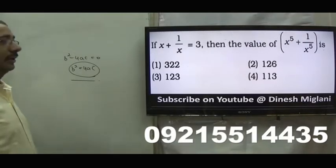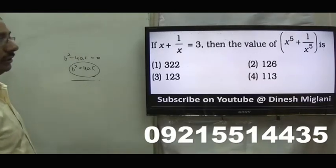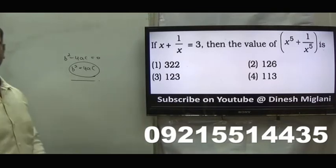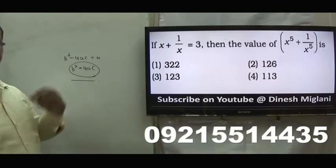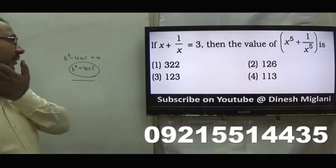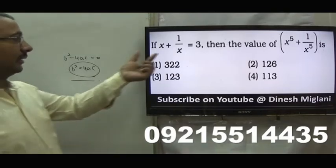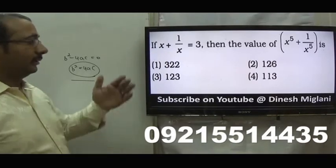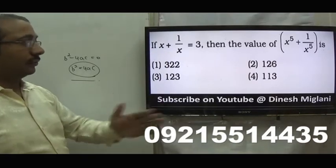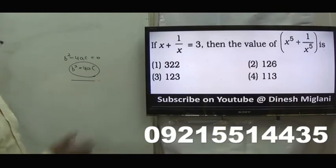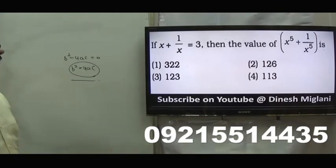x plus 1 by x equal to 3. I have told you this concept earlier. The answer is 123. What you have to do: first find x square plus 1 by x square, then find x cube plus 1 by x cube, then multiply. In my last session also, we have taken this problem.